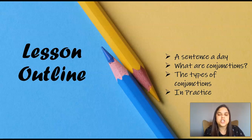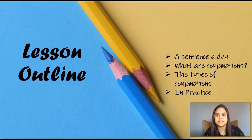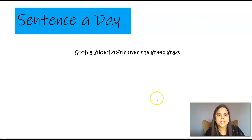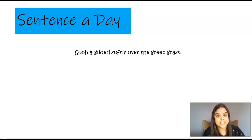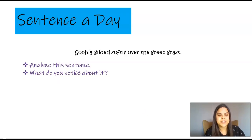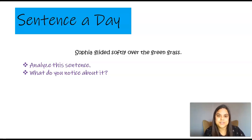Conjunctions can be pretty complicated because you need to know a few things before we jump into them. So that's what we're going to do after our sentence today. Sentence a day: 'Sophia glided softly over the green grass.' Analyze the sentence — what do you notice about it?